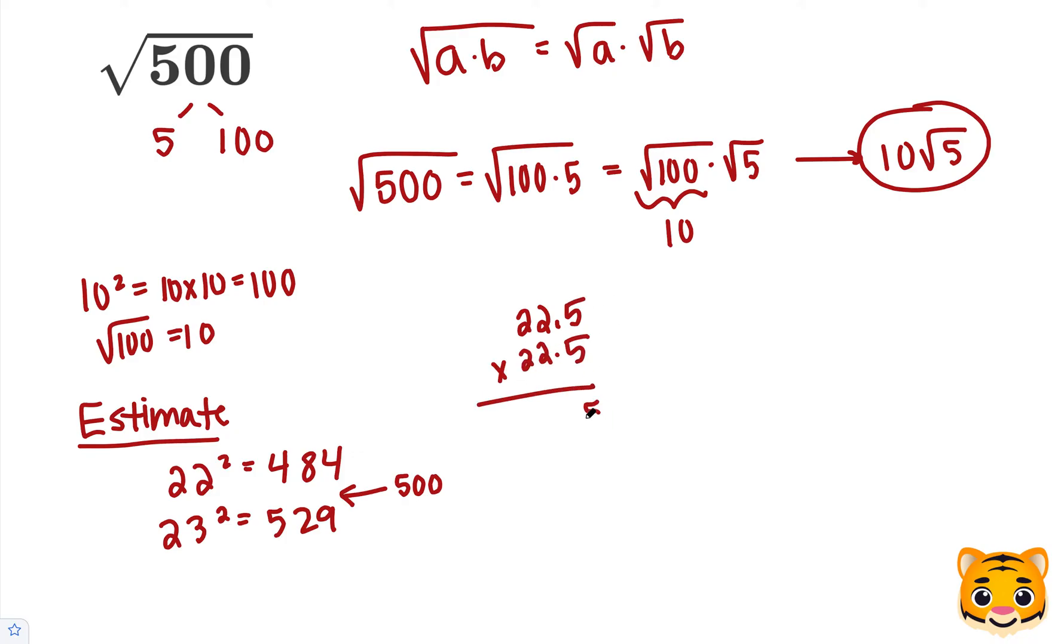5 times 5 is 25, carry the 2. 2 times 5 is 10, plus 2 is 12, and then 2 times 5 is 10, plus 1 is 11. Add our 0. 2 times 5 is 10, carry the 1. 2 times 2 is 4, plus 1 is 5, and 2 times 2 is 4. Now add our double zeros, and then we'll follow the same pattern from the previous value, and we'll add those together.